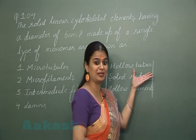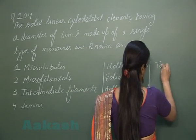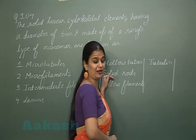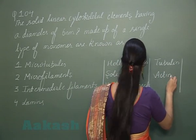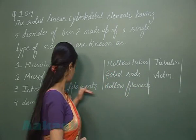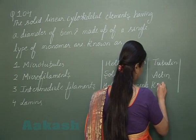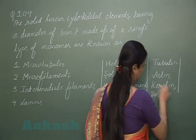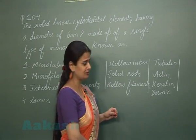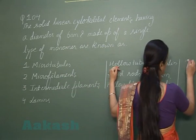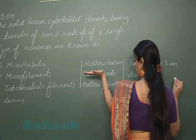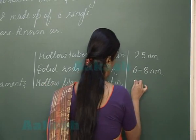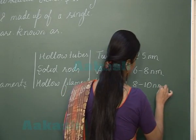The hollow tubes (microtubules) are made up of tubulin protein and have a diameter of approximately 25 nanometers. Microfilaments are solid rods made up of actin-like protein, with a diameter ranging from 6 to 8 nanometers. Intermediate filaments are hollow and made up of keratin and desmin-like proteins, with a diameter of 8 to 10 nanometers.